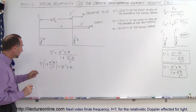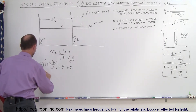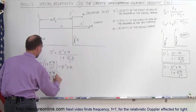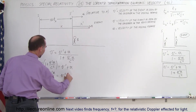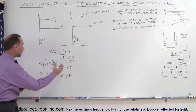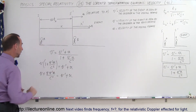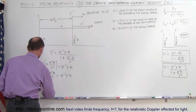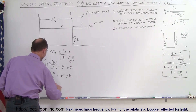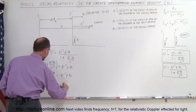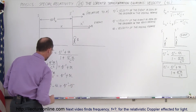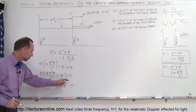We expand by multiplying through to get v + vv′u/c² = v′ + u. Now we want all terms containing u on the left side and everything else on the right side. So we get vv′u/c² − u on the left, and v′ − v on the right.